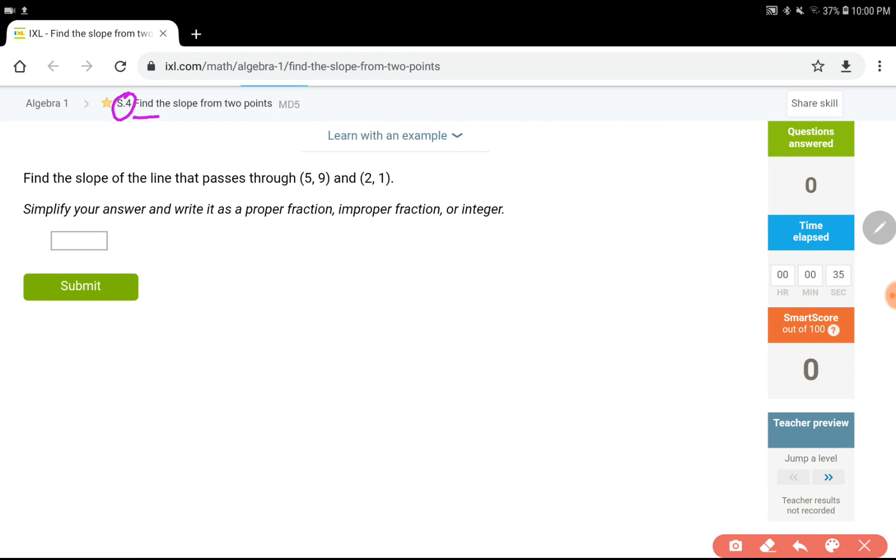This one is about finding the slope when we do not have anything visual, we just have the two points.